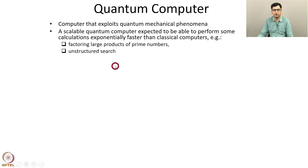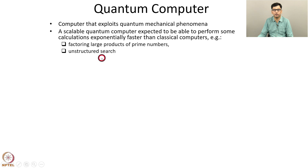Another example is unstructured search — for example, searching for a key in symmetric key encryption which converts a particular piece of plain text to a ciphertext. That is searching through the key space, which is unstructured. A quantum computer can perform unstructured search faster than a classical computer.